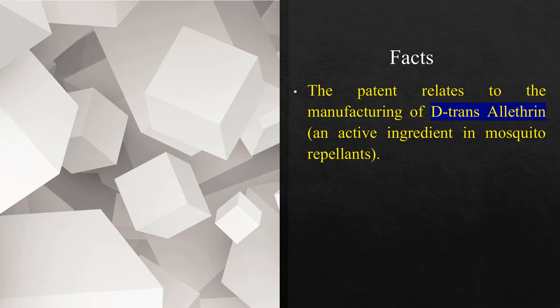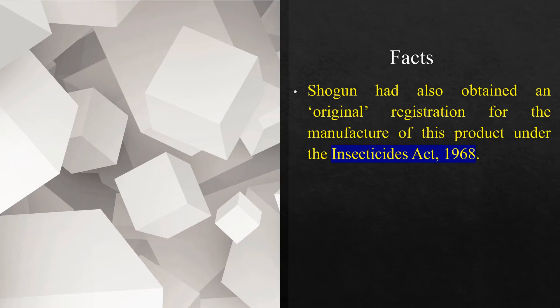The patent relates to the manufacturing of D-transallethrin, which is an active ingredient in mosquito repellents. Shogun had also obtained an original registration for the manufacture of this product under the Insecticides Act 1968. So Shogun had an added advantage in that it had both a process patent and this original registration.